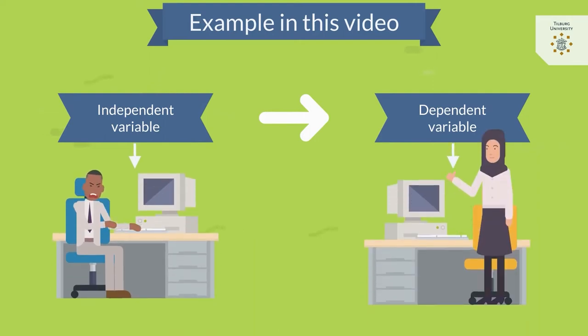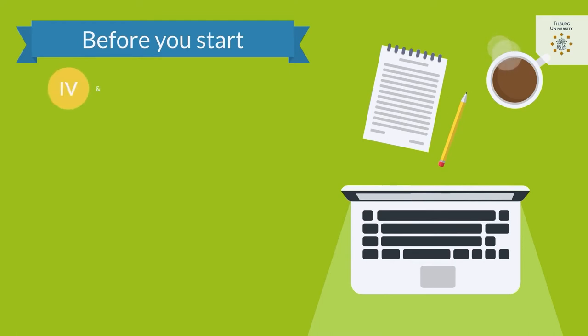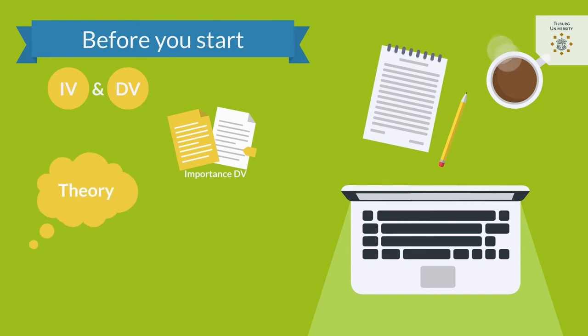What do you need before you start writing? First, you need to have an independent and a dependent variable. Second, you need one or two scientific articles that talk about your dependent variable and the importance of it. Third, you need a theory that explains the relationship between your two variables, so in our case, a theory that explains the relationship between workload and job satisfaction. Fourth, you need three empirical articles that found a relationship between the two variables.